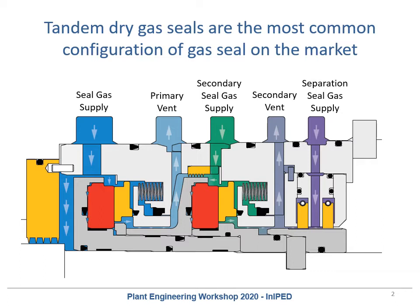The next side is the separation seal gas supply. This gas is typically nitrogen that flows in between the two carbon rings on the far right of the diagram. What this gas does is ensure that no bearing oil can get into the gas seal. Over here is typically the bearing, and these bearings are full of oil, which is very bad for a dry gas seal. So the separation seal gas supply helps keep the oil away from the dry gas seal.